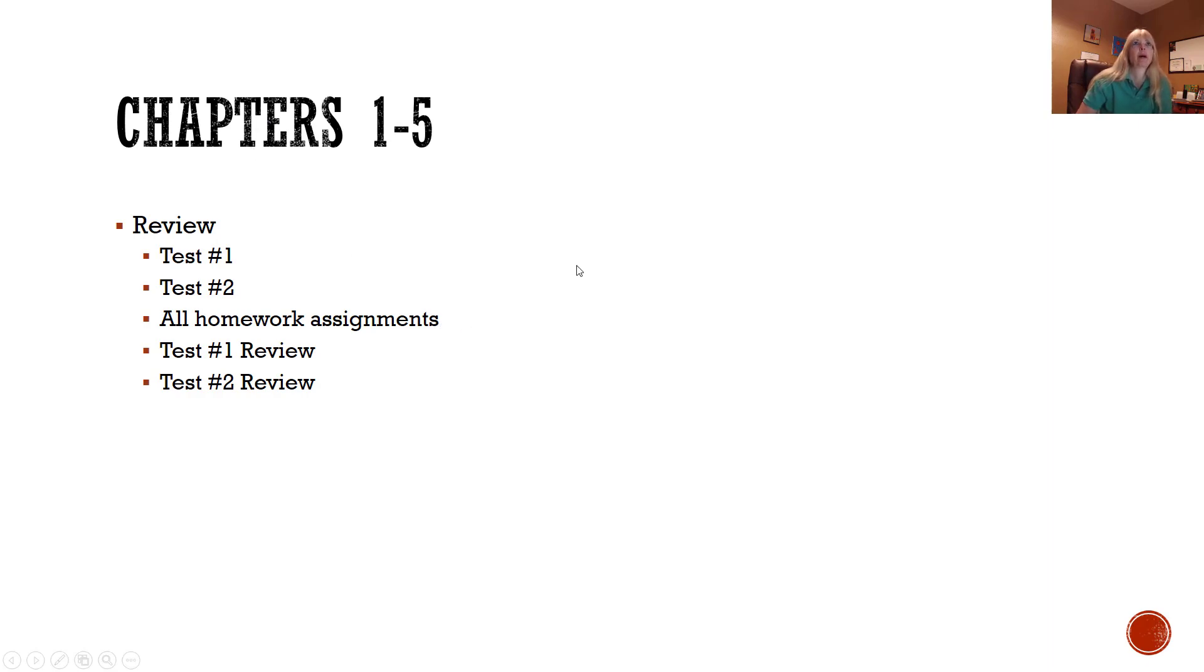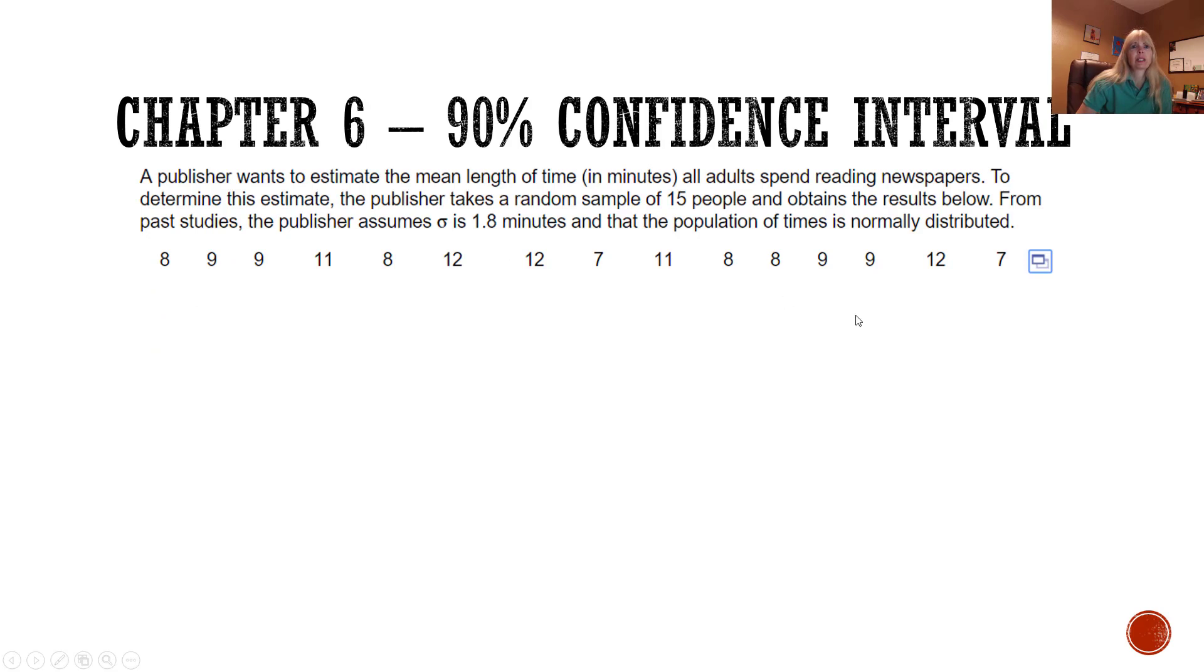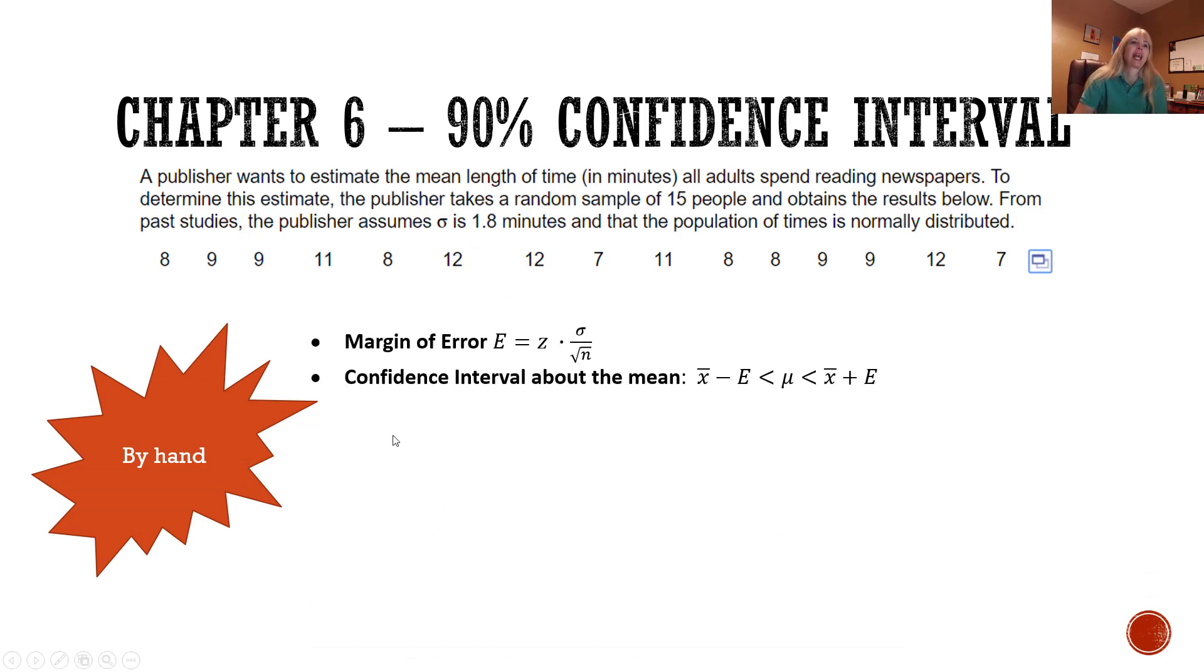Be sure and go back and review chapter six of this last material. Let's say we wanted to come up with a confidence interval and they've actually given me the population standard deviation. When you're given that, then you know you're going to use the Z critical value.